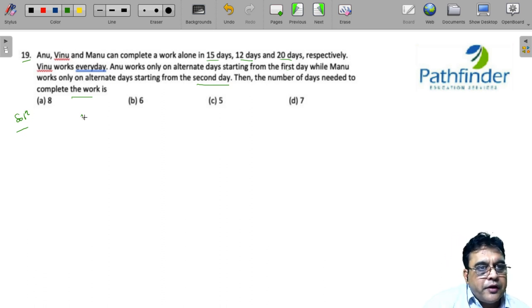We have Vinu who completes the whole work in 12 days. On first, third, fifth and so on days, Anu works with Vinu. And on second, fourth, sixth and so on days, it is Manu who works with Vinu.